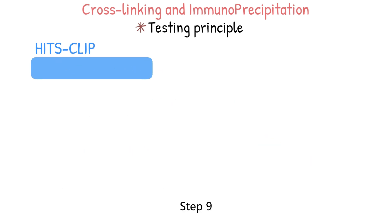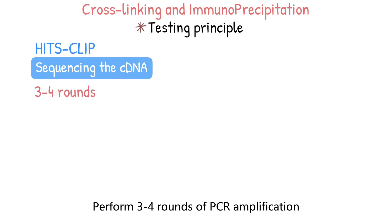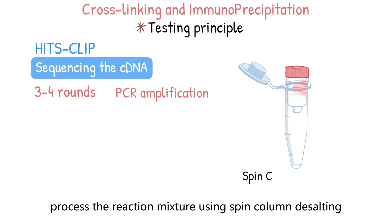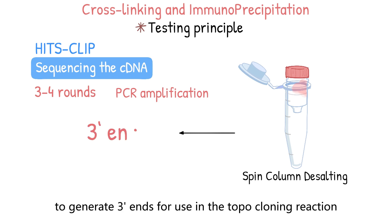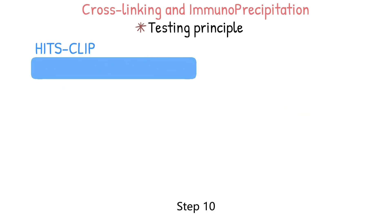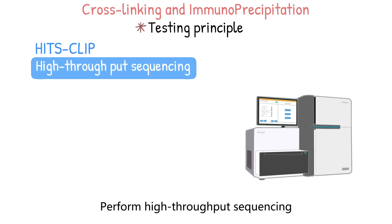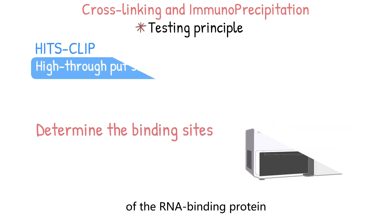Step 9: Sequencing the cDNA. Perform 3-4 rounds of PCR amplification, process the reaction mixture using spin-column desalting, and incubate at 72 degrees Celsius for 20 minutes to generate 3' ends for use in the TOPO-cloning reaction. Step 10: High-throughput sequencing. Perform high-throughput sequencing of the amplified cDNA to determine the binding sites of the RNA-binding protein.